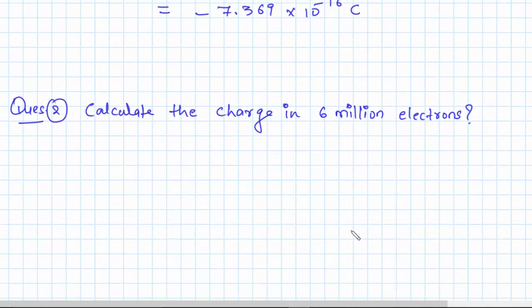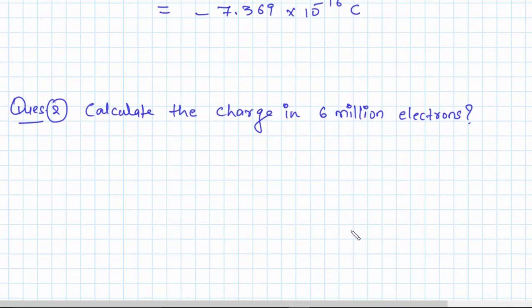All right, so this was a really basic calculation just to get things started. Let's try to solve one more example, or rather I would suggest you try to solve it yourself. Pause the video and try to solve this yourself. If you face any difficulty, just reach out to me. I will definitely help you out. Also, I have attached the solution to this problem. For those who are trying it out, let me just give you the final answer. The final charge in 6 million electrons will be 9.612 times 10 to the power minus 13 coulombs. So this is the charge in 6 million electrons. Try to solve this yourself. I'll catch you in the next lecture.